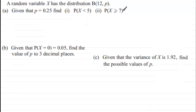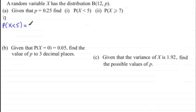In part one, we've got to work out the probability that our random variable X is less than five. In other words, that's the probability that X equals 0 plus probability X equals 1, 2, 3, all the way up to 4. So we can say that this is exactly the same as the probability that X is less than or equal to 4.